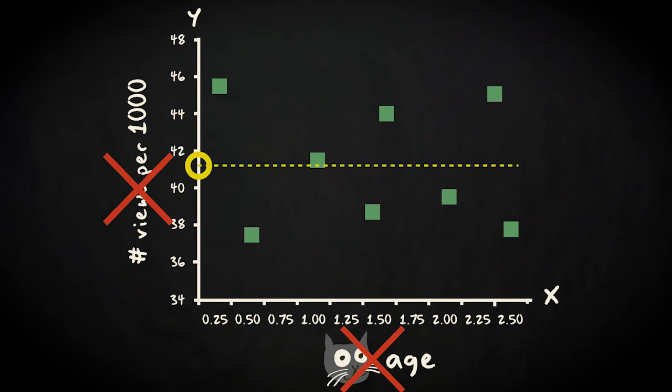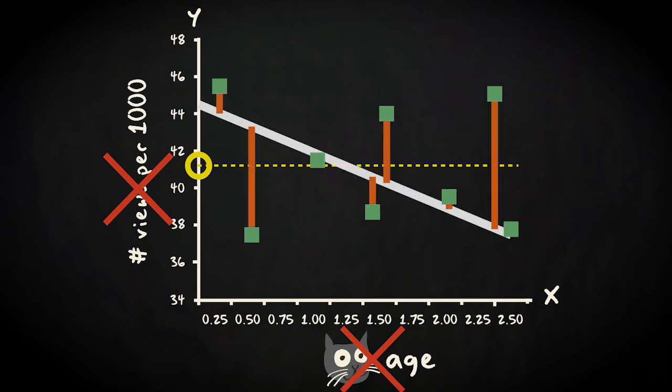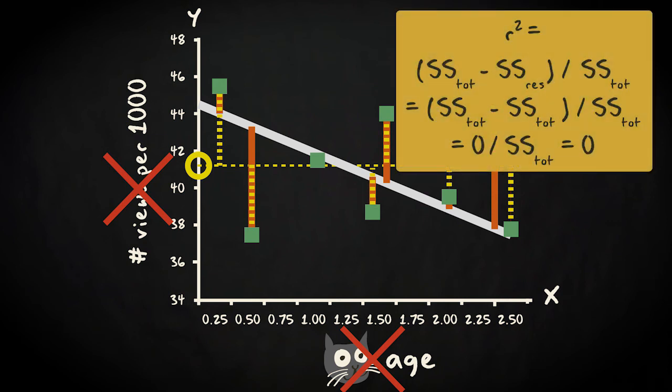This produces a horizontal line with an intercept equal to the mean of the response variable. As a consequence, the residuals, the differences between each prediction and observation, are the differences between each observation and the mean. The residual sum of squares is the same as the total sum of squares. Subtracting them will result in zero, so r squared will be zero. In this worst case scenario, our model captures none of the variation in the response variable.